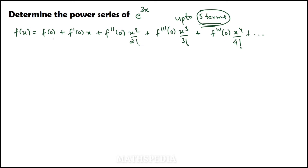You can see this will be the first term, second term, third term, fourth, and fifth. So till here — up to the fourth derivative — you have to find out these five terms. Starting with f(0).